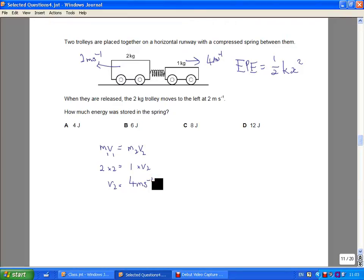So if that was true, then we can find their total kinetic energy. Their total kinetic energy must have come from the spring. So EPE must equal half times 2 times 2 squared plus half times 1 times 4 squared.